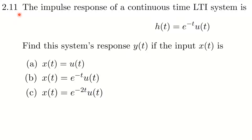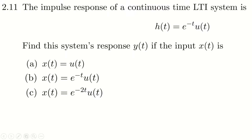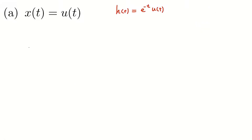Question 2.11: we have an LTI system and this is the impulse response of the LTI system. We want to see what is the response of the system for different inputs. Let's consider them one by one. The first input is x(t) = u(t), the unit step function, and the impulse response of the LTI system is h(t) = e^(-t)u(t).